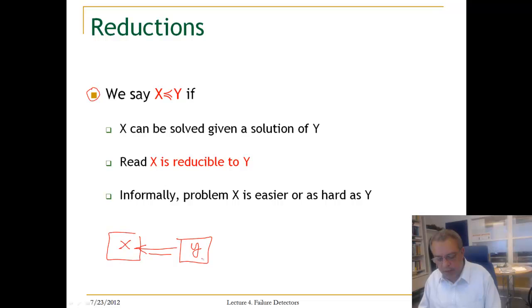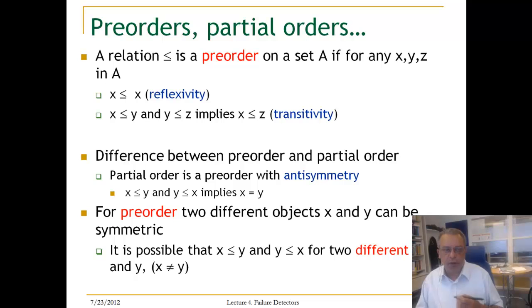If X can be solved given a solution for Y, it says X is reducible to Y. I will draw it this way, and it says that X is an easier or as hard problem as Y. The relation for reducibility is a pre-order relation.